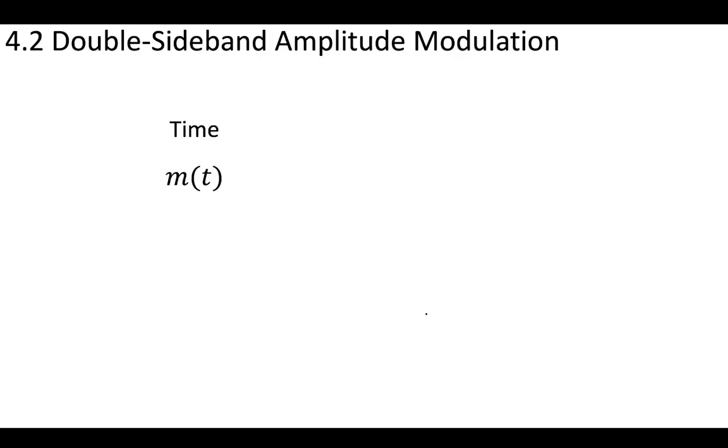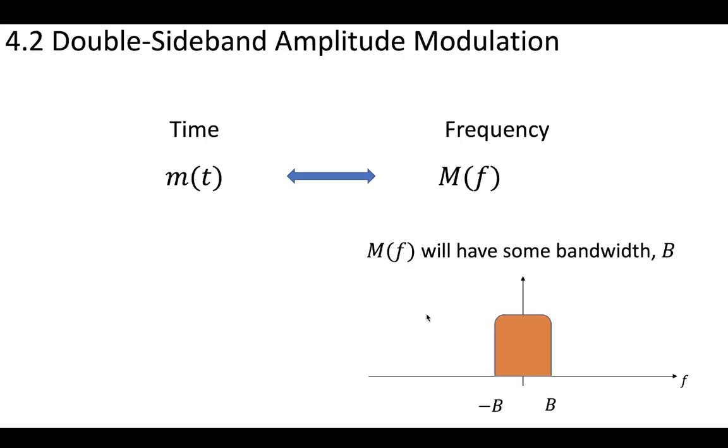In the time domain, we'll have some message m(t), and in the frequency domain, we'll consider that if we took the transform, that would be some capital M(f). Now, we know that our message in the time domain, if we convert it to the frequency domain, we'll be able to see that it has some bandwidth, and we'll say that bandwidth is bandwidth B.